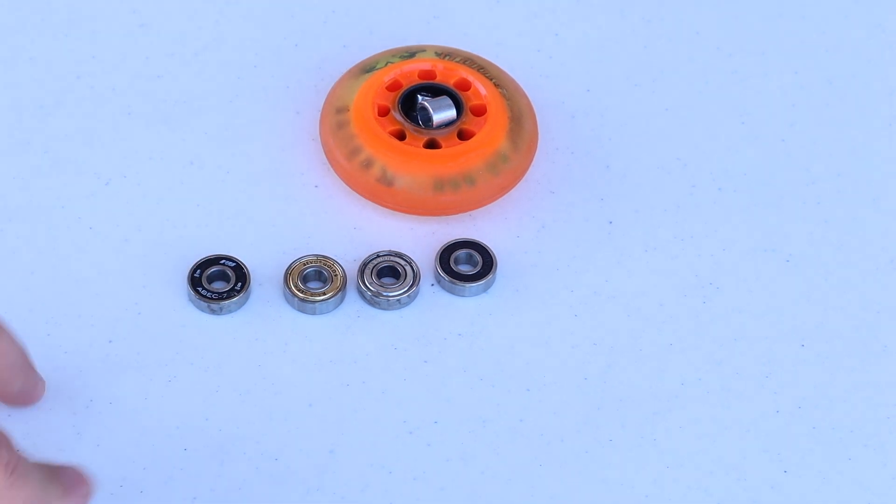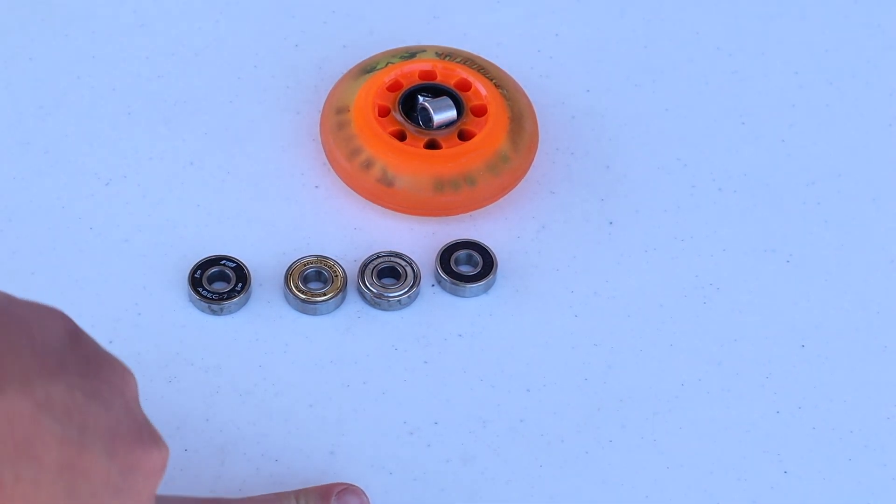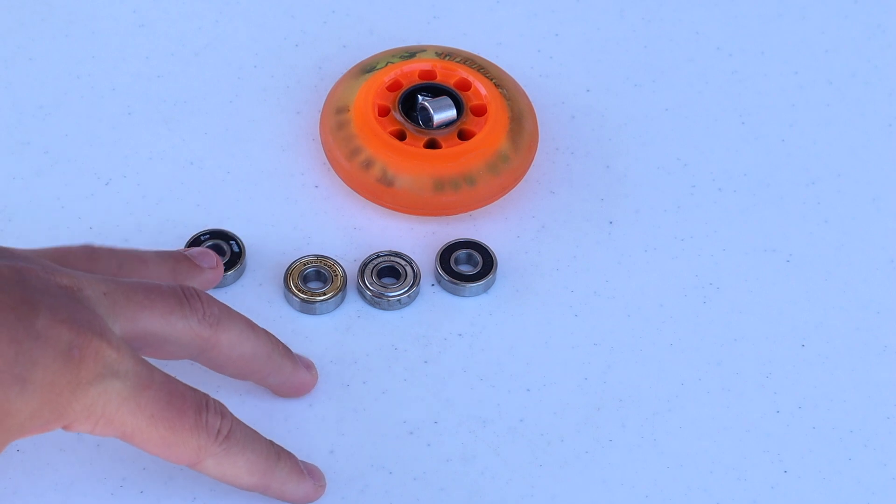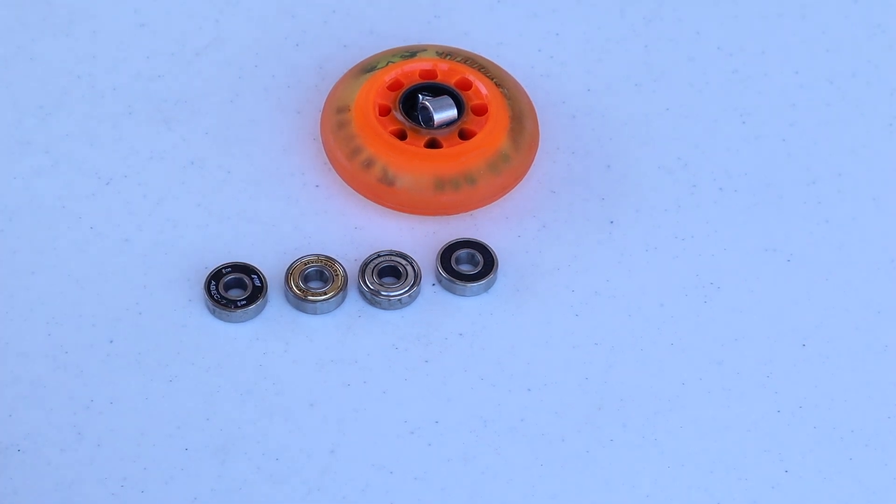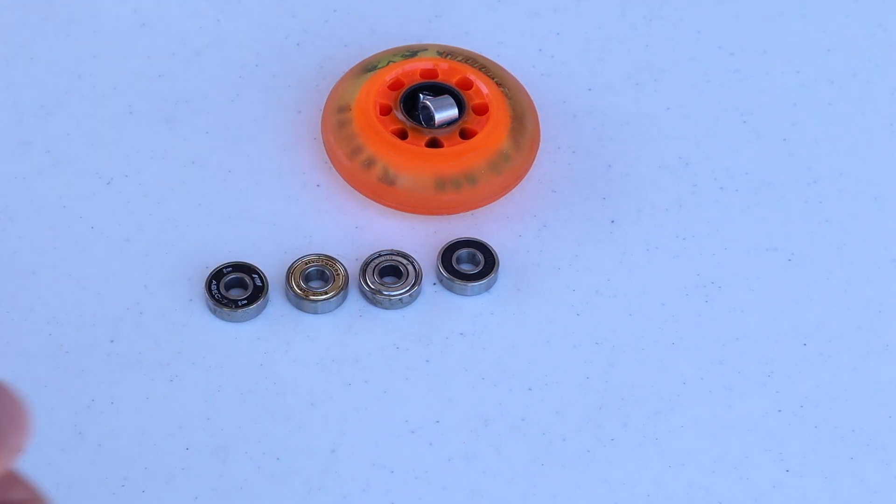It starts with ABEC 1, which is the worst you can get. It's actually hard to find because it's so bad. You can only really find it on really cheap skateboards or skates. ABEC 3s start to be used more commonly with roller blades and skateboards, and that's going to spin a little bit faster.